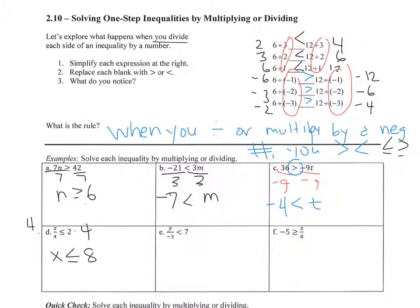E: I need to multiply both sides by negative 3. When I multiply both sides by negative 3, I need to change this less than to a greater than. 7 times negative 3 is negative 21. And then f, the last one: I'm multiplying by 8. That's a positive number, so it's negative 40. I don't change the sense of the inequality. Greater than or equal to z.